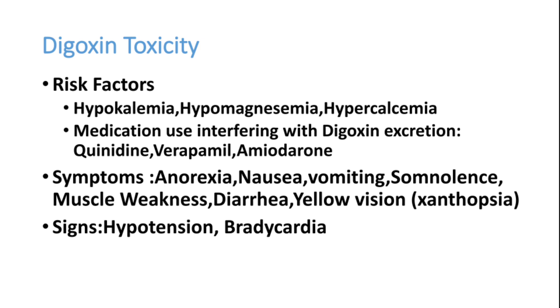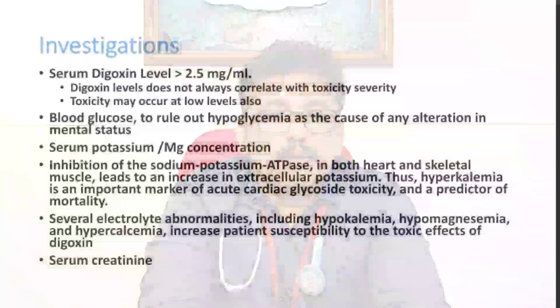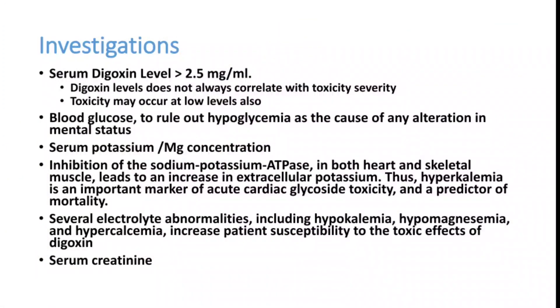When we diagnose suspected digoxin toxicity — such as a patient on digoxin presenting with vomiting, abdominal pain, or renal failure — certain investigations are required. Digoxin level is the most important: if it is more than 2.5 ng/mL, suspect digoxin toxicity. Blood sugar should be checked to rule out hyperglycemia as a cause of altered mental status. Serum potassium and serum magnesium are the two key electrolytes to check, along with hypercalcemia. Creatinine should be done to rule out renal failure.